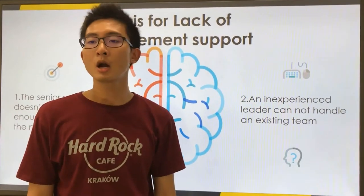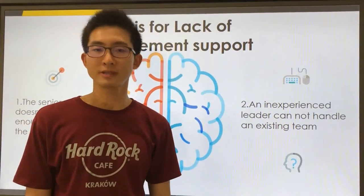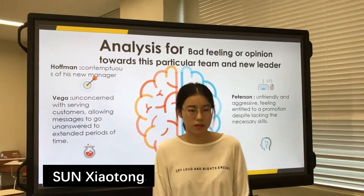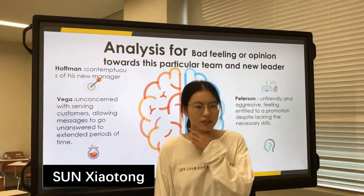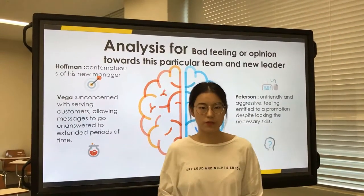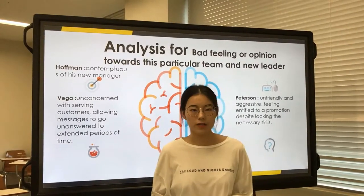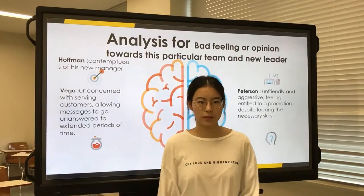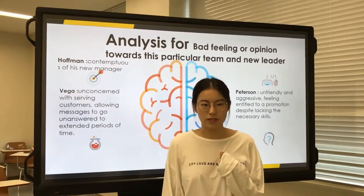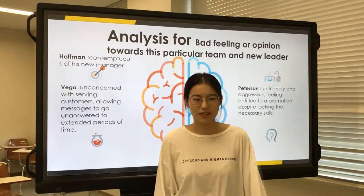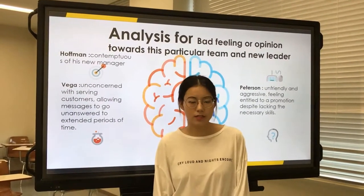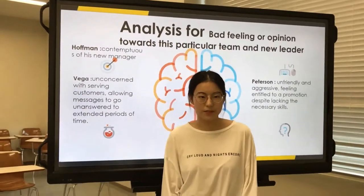For the analysis of Alice Hoffman, I would like to apply the Acquired Needs Theory, which includes the need for achievement, need for affiliation, and need for power. Hoffman had a need for power, evidenced by his refusal to change methods based on Melissa's feedback and his dismissive attitude. He also accumulated power by not sharing information. Additionally, he had a high need for achievement, using his full potential to reach his targets.